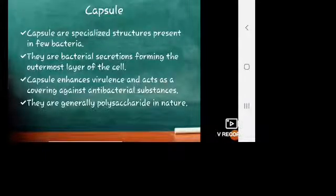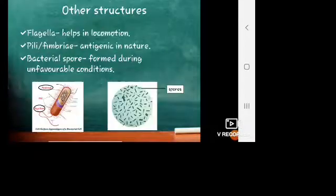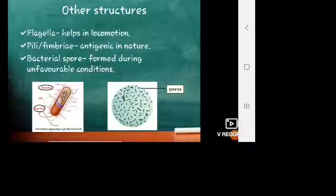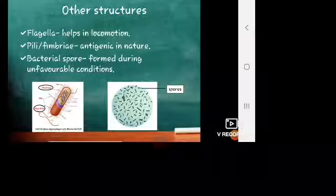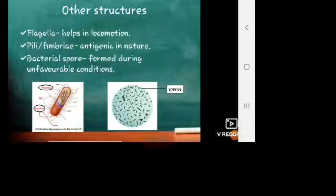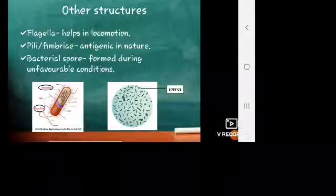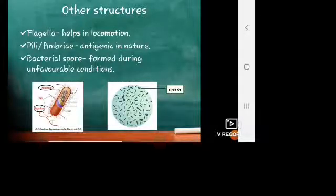There are also other structures present in the bacteria. They are flagella which helps in the locomotion of the bacteria and are present only in motile bacteria. The pili or fimbriae are hair-like projections present in every bacteria and are antigenic in nature. The bacterial spores, also known as endospores, are formed during unfavorable conditions and are involved in sporulation of the bacteria.